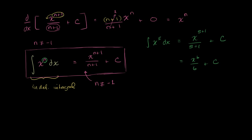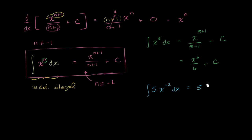Let's try another example: the antiderivative of 5 times x to the negative 2 power dx. Scalars can go in and out of the integral operator when multiplying by a scalar, so this equals 5 times the antiderivative of x to the negative 2 power dx.